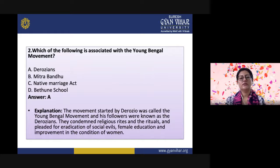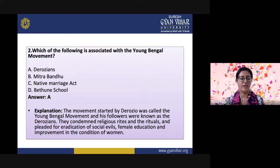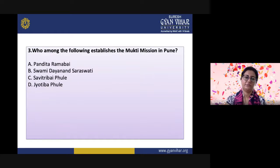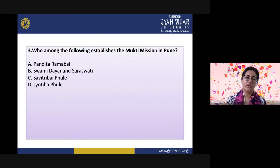The Young Bengal Movement was started by Henry Vivian Derosio, and his followers were known as Derosians. They condemned religious rites and rituals and pleaded for the eradication of social evils, female education, and the improvement in the condition of women. Question 3: Who among the following established the Mukti Mission in Pune? Options are: Pandita Ramabai, Swami Dayanand Saraswati, Savitribai Phule, or Jyotiba Phule. The correct answer is Pandita Ramabai.